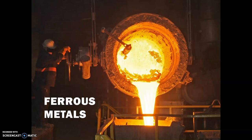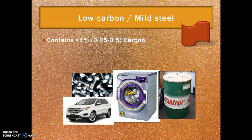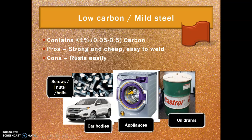Let's take a look at some ferrous metals. I've included a picture of a huge crucible showing the very high temperatures needed for steel. Our first is low carbon or mild steel — the icon here is all about sheet material. Low carbon steel has less than one percent carbon, typically around half a percent. It is really strong, cheap, and easy to weld, and used absolutely everywhere. However, it rusts easily and is not corrosion resistant, so it needs to be coated, plated, or painted. It's used for screws, nuts and bolts, sheet components like car bodies, appliances, and oil drums.